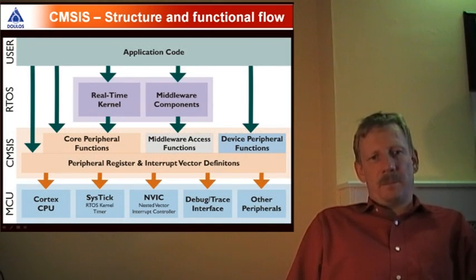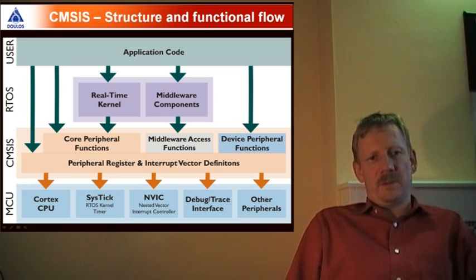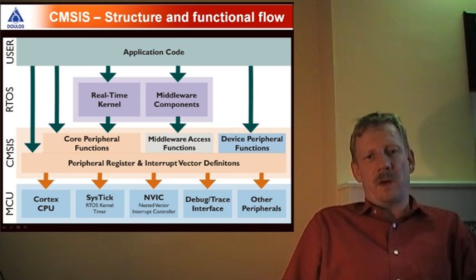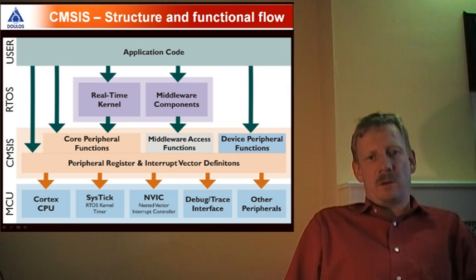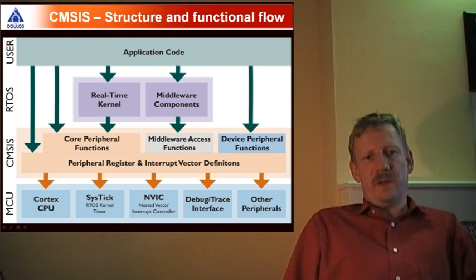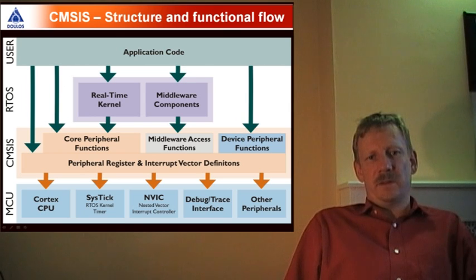Looking at the structure of CMSIS, we have the hardware layer — our MCU. With Cortex-M devices, there is much more in these devices than before with ARM. For example, a SysTick timer is provided for easy access and easy RTOS kernel implementations. We have a fixed vectored interrupt controller implemented in the Cortex-M architecture — fixed and the same for every Cortex-M device, with the same registers. There are also new debug features and trace interface, fixed and the same for all Cortex-M devices. All other peripherals implemented here will need to have a similar way to access this, and that is provided with CMSIS — a layer on top of the hardware.